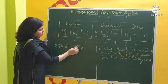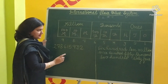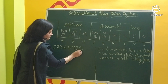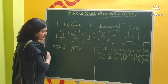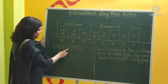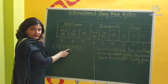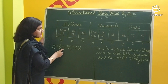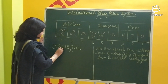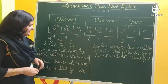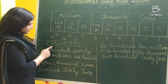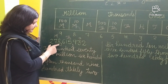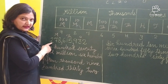The first period is ones, and in the ones period there are 3 places — 1, 2, 3 — then a comma. Next is thousands, which again has 3 different places: thousand, ten thousand, and hundred thousand. Then comes the million period, which again has 3 different places: one million, ten million, and hundred million.